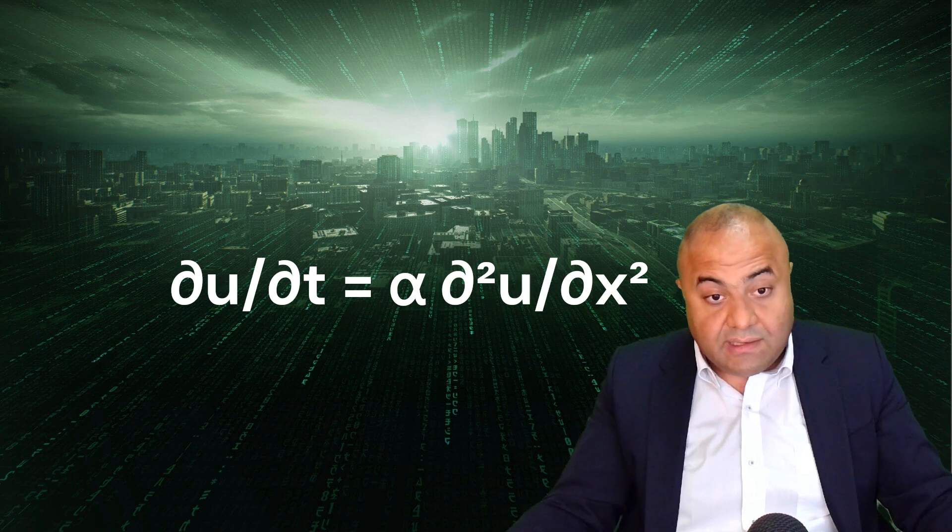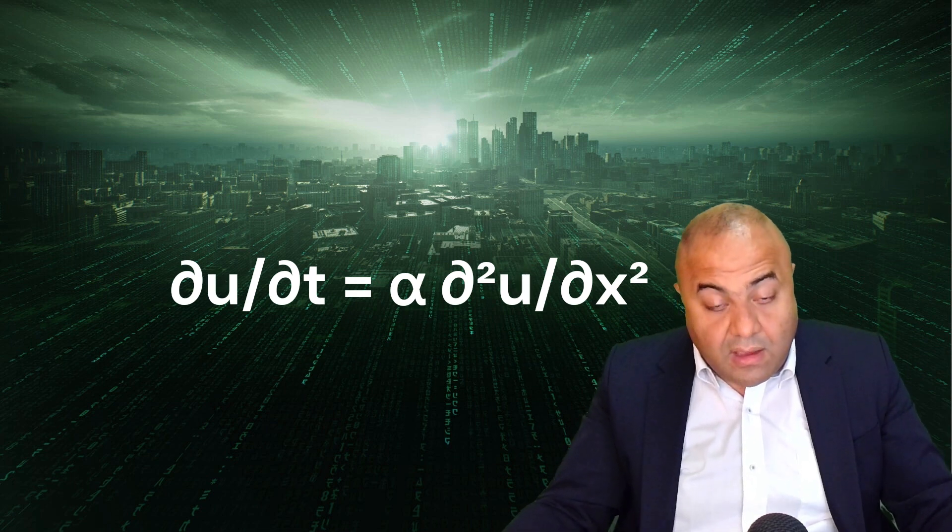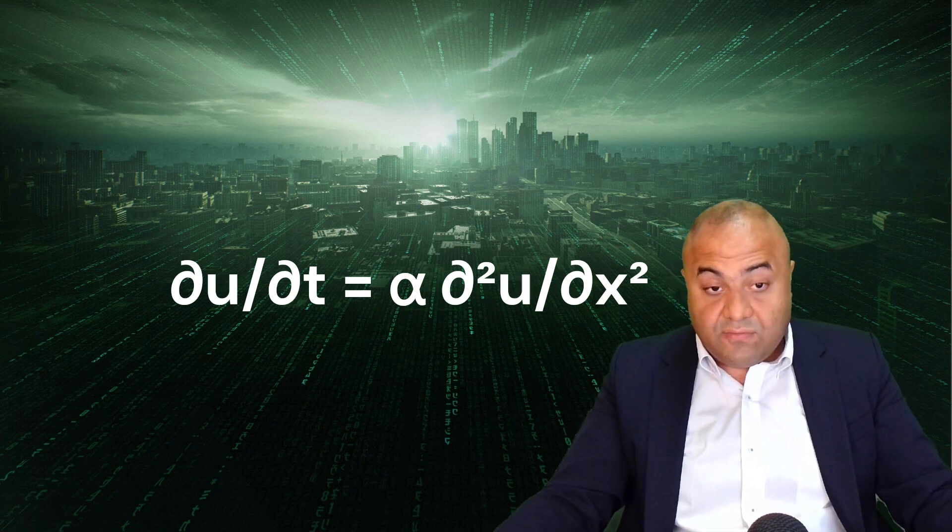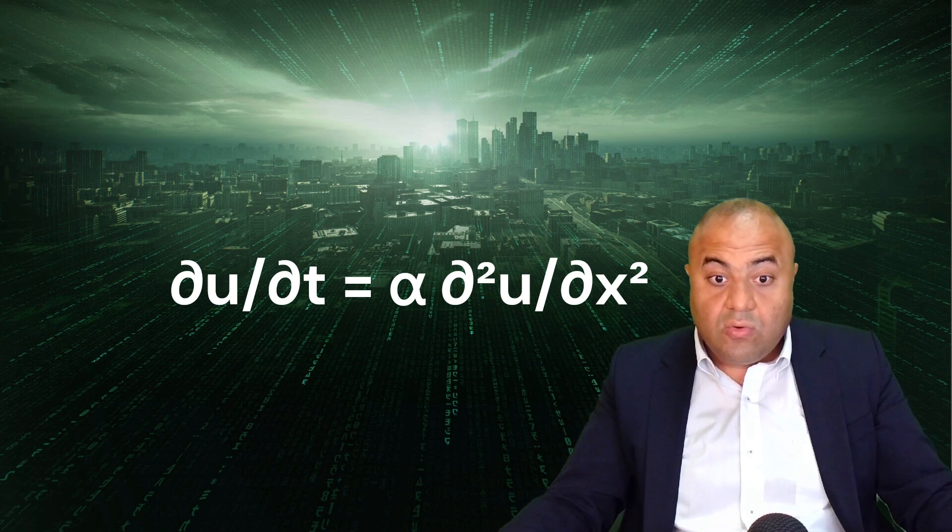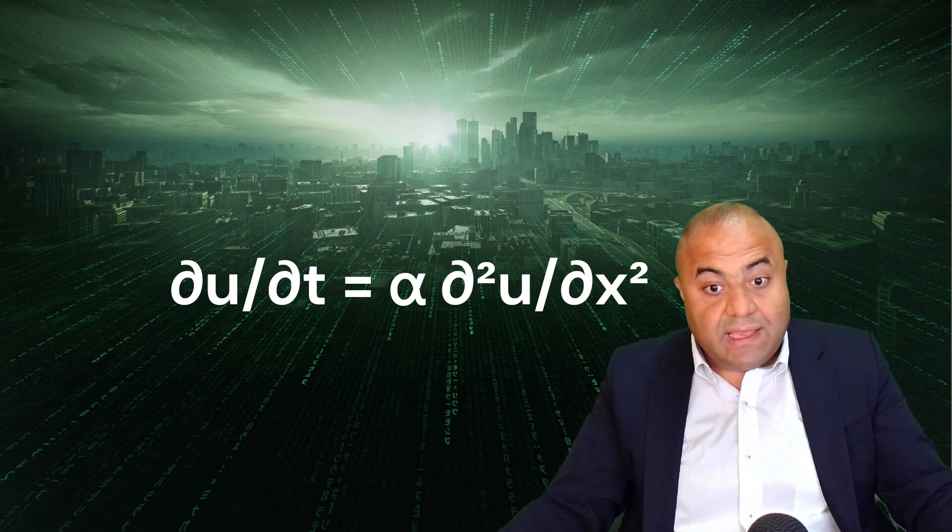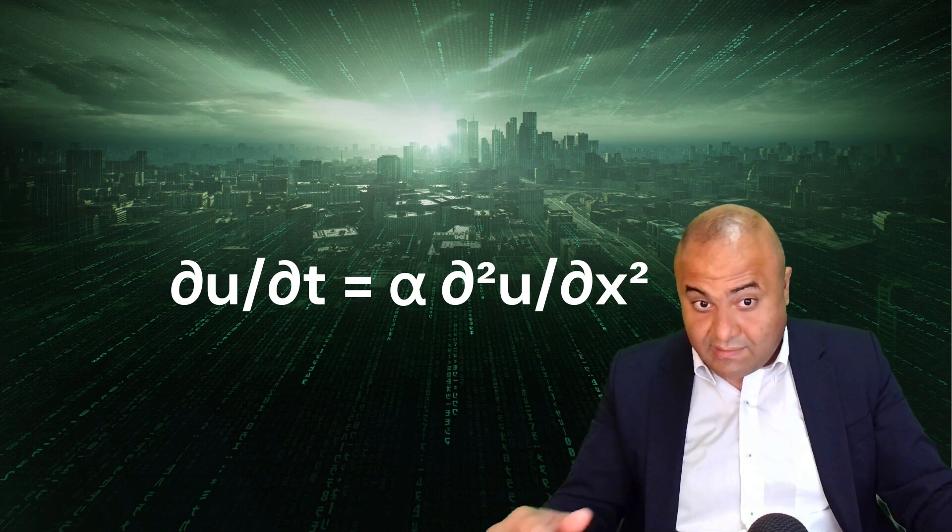and ∂²u/∂x² represents the second derivative of temperature with respect to the spatial coordinate x.